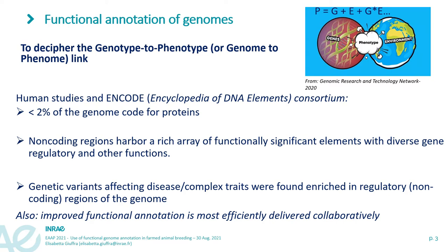Annotating genomes is a fundamental requisite in order to decipher the genotype-to-phenotype or genome-to-phenome link. This is at the heart of predictive biology — that means using genomic information to predict complex phenotypic outcomes. We know that less than 2% of genomes code for proteins, that non-coding regions harbor a rich array of functionally significant elements, and importantly, that genetic variants affecting disease and complex traits are found enriched in regulatory non-coding regions.